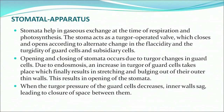What is stomata? Stomata is an apparatus that helps in gaseous exchange during respiration and photosynthesis. The stoma acts as a turgor-operated valve which closes and opens according to alternate changes in the flaccidity and turgidity of guard cells and subsidiary cells. Opening and closing of stomata occurs due to turgor changes in guard cells. Due to endosmosis, an increase in turgor of guard cells takes place, resulting in stretching and bulging out of their outer thin walls.